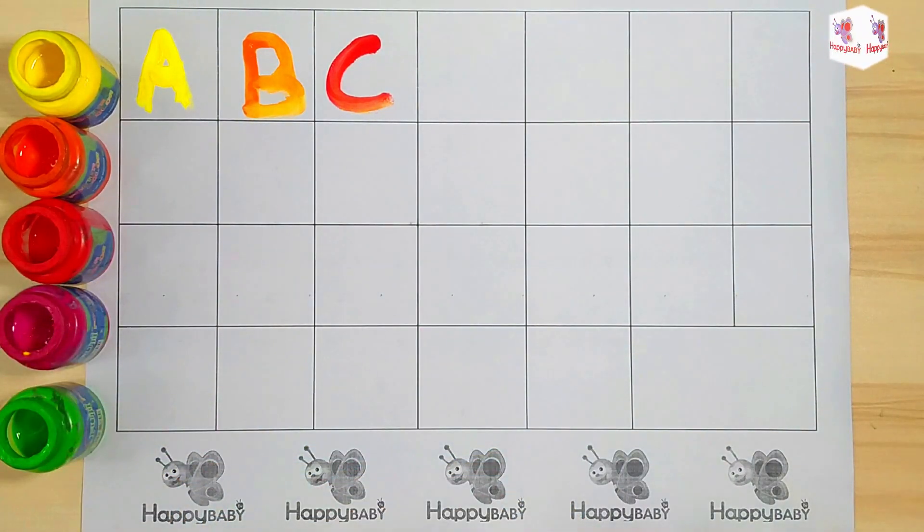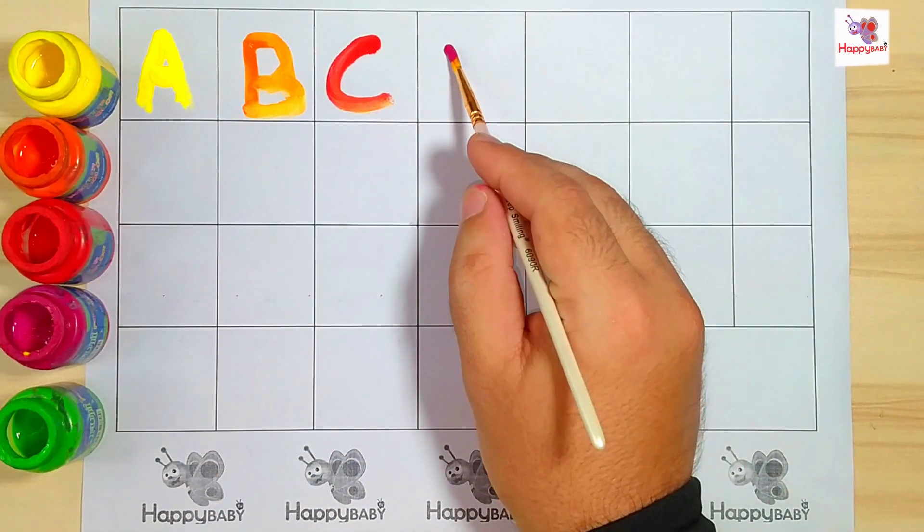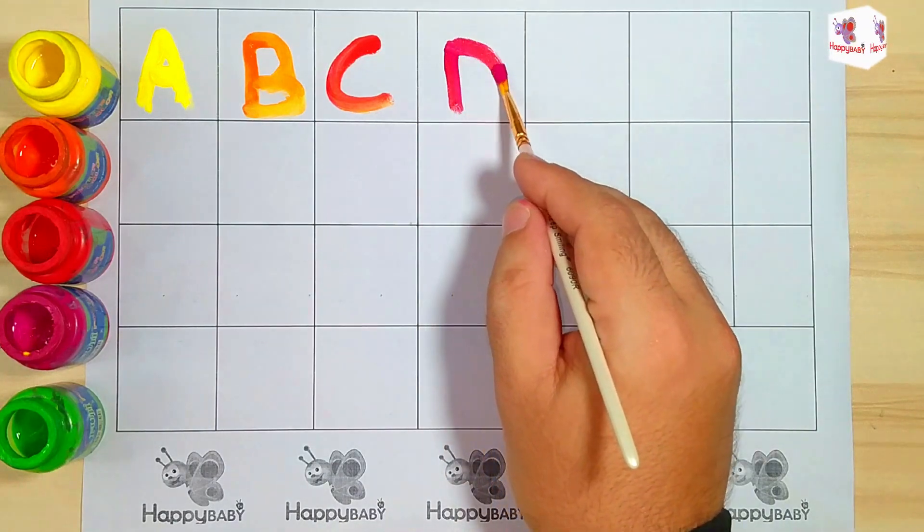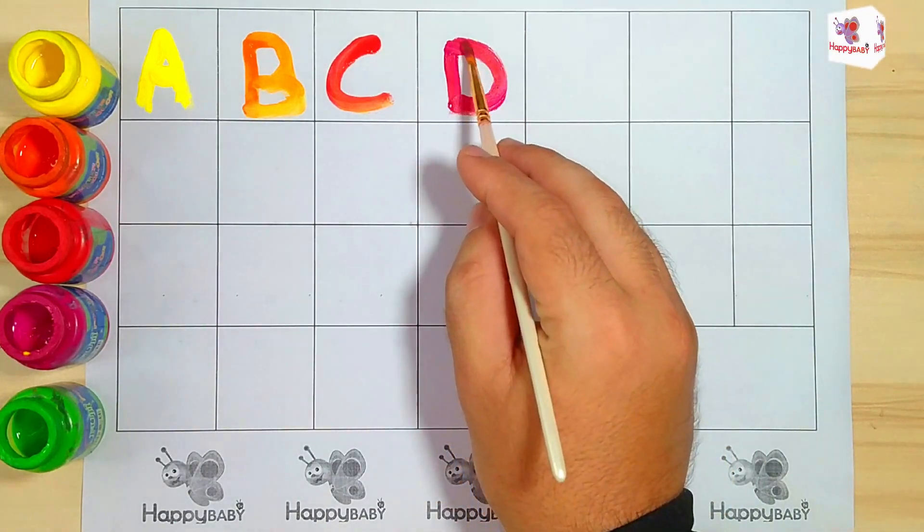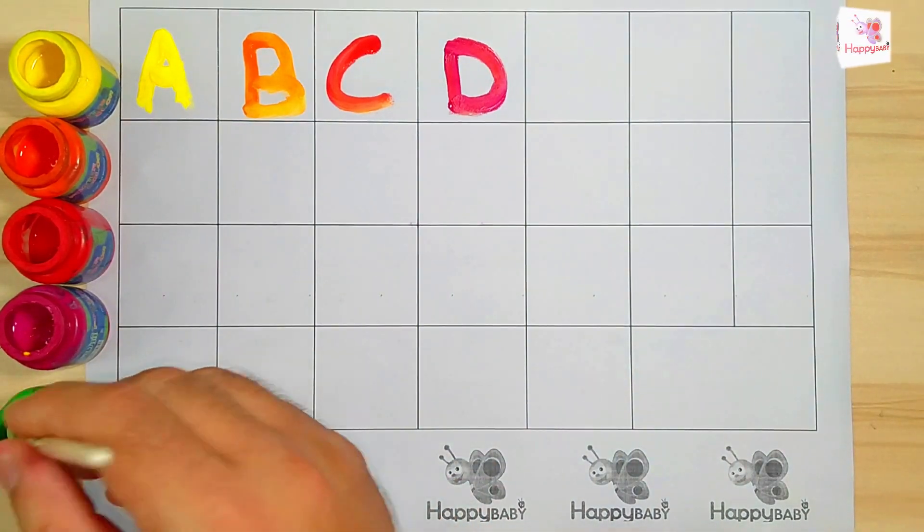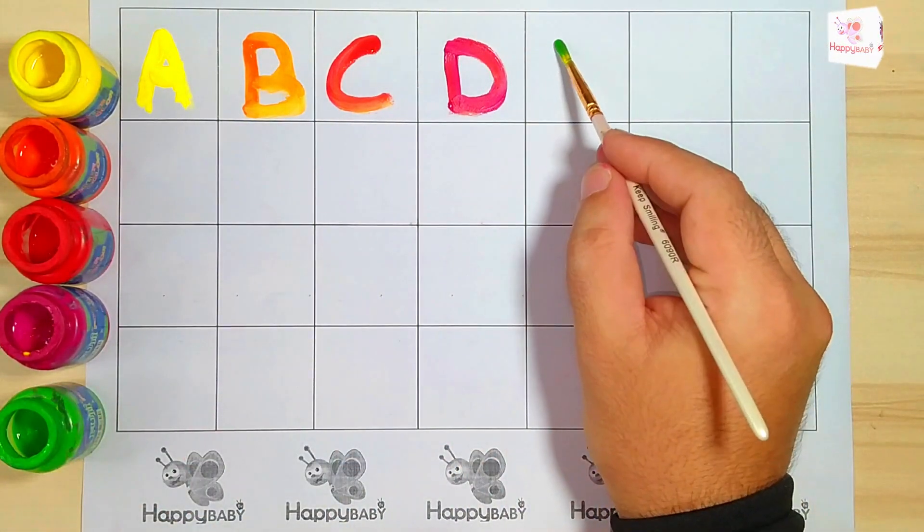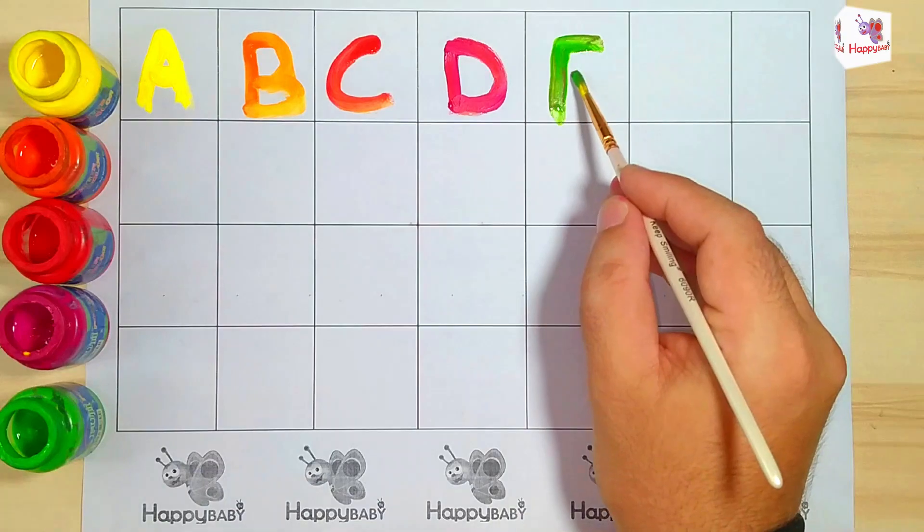Purple color. D for Duck. Green color. E, E for Elephant.